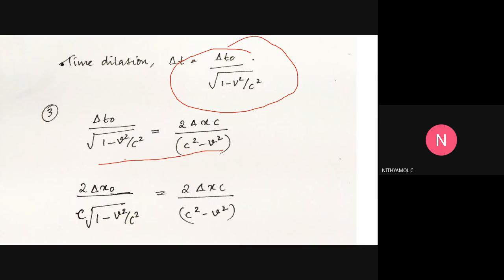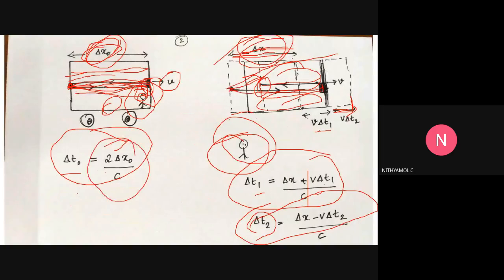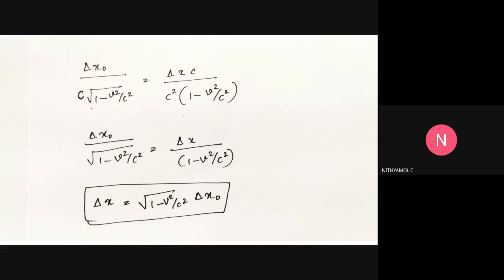Let's rearrange this. We substitute delta t0 = 2*delta_x0/c. So we have 2*delta_x0/c divided by sqrt(1 - v²/c²) equals 2*delta_x*c/(c² - v²). Cancelling common factors of 2 and c, we get delta_x0 divided by sqrt(1 - v²/c²) equals delta_x divided by (1 - v²/c²).